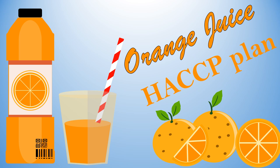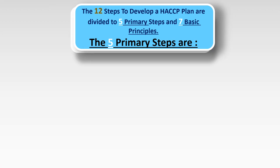Using our orange juice example, we'll train ourselves on how to make a HACCP plan for any food product. First, we must understand that the 12 steps to develop a HACCP plan are divided into five primary steps and seven basic principles. Today we'll explain in detail the five primary steps.